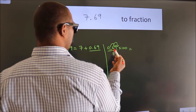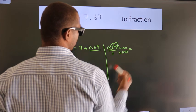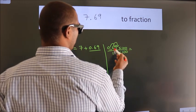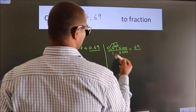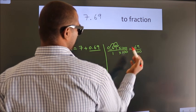Whatever we are multiplying in the numerator, in the denominator also do the same. Next, 0.69 into 100 is 69. 1 into 100. This is the fraction we got here.